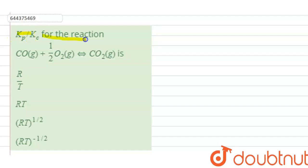Kp by Kc for the given reaction: CO gaseous plus half O2 gaseous equilibrium CO2 is: R by T, RT, RT raised to the power half, RT raised to the power minus half.